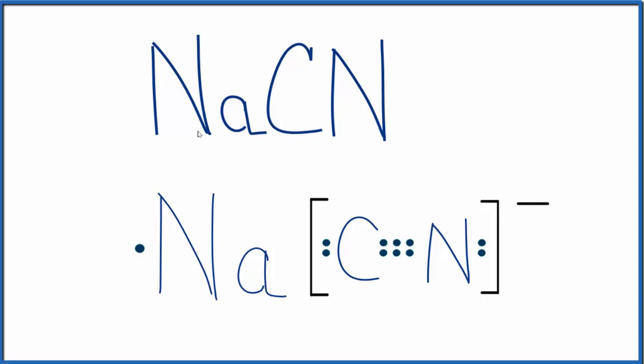When we draw the NaCN Lewis structure, sodium is the metal, so it loses this valence electron to our polyatomic ion. When it does that, it becomes positive—it lost an electron. The cyanide ion then becomes negative. That's where this negative comes from.